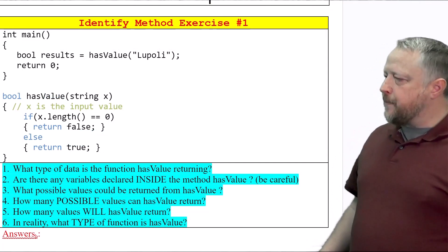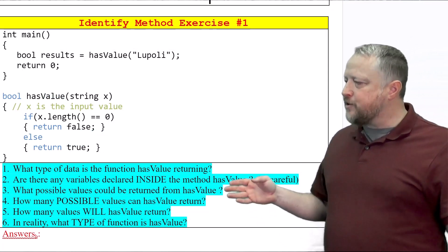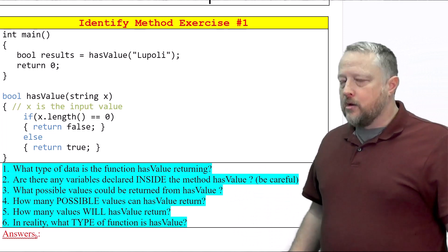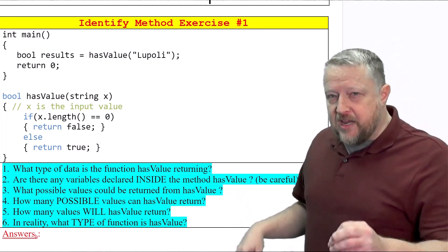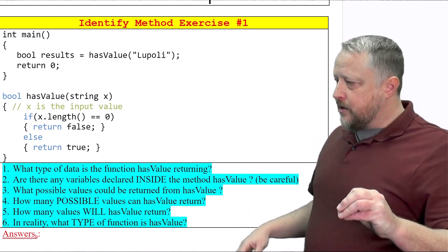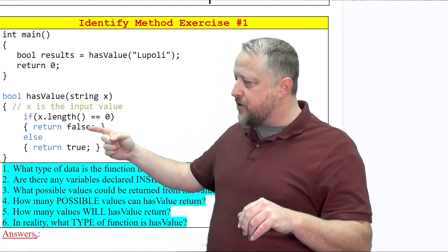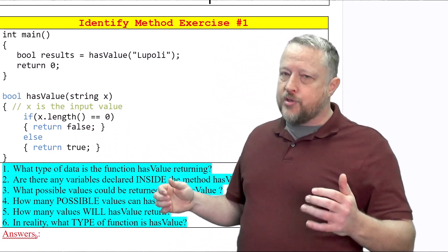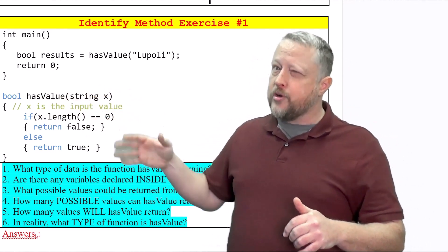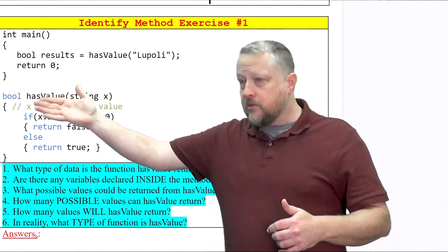Number one: what type of data is this function hasValue returning? To be precise, it really is returning a bool. I know a lot of you probably said true or false, and that's true too, but to be honest, bool is really the correct answer because that's what's literally listed as the function's return type.